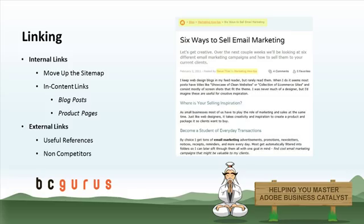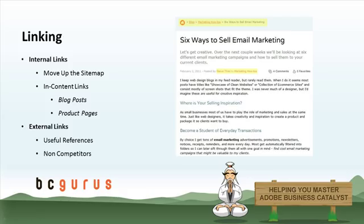The next component of on-page optimization is linking. We want to consider internal links and external links. For internal links, you want to move up the hierarchy of the sitemap. Breadcrumbs are a great way to do that — you can see we're within a blog at the fourth level. Moving up, you go to the category within the blog, then the blog itself, and then all the way up to the home page. You also want to include links within the content to other deep-level pages within the website.